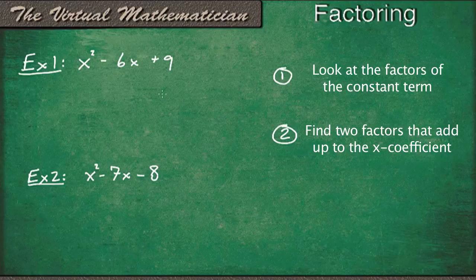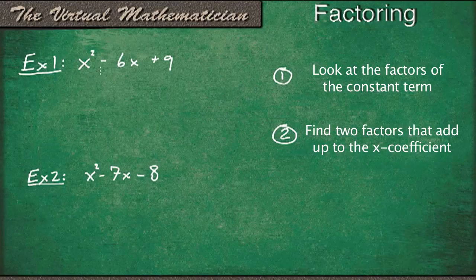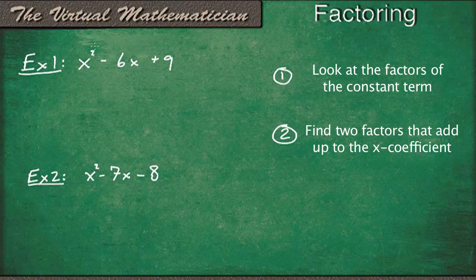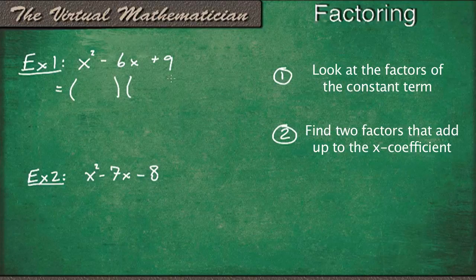So before we jump into example one, let's talk about the goal again. The goal is to turn a second degree polynomial, like we have here, with x squared as the highest exponent on the variable, into the product of two first degree polynomials. So that means that each of these are going to have an x in them.